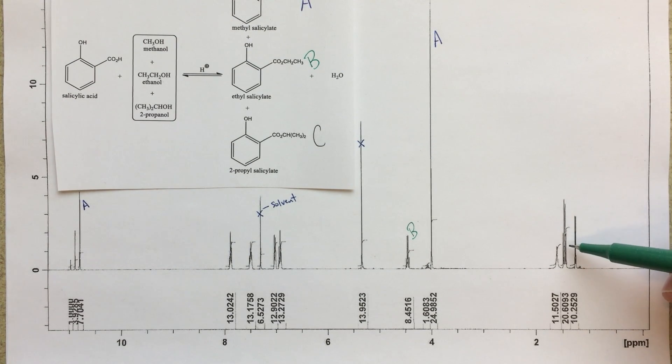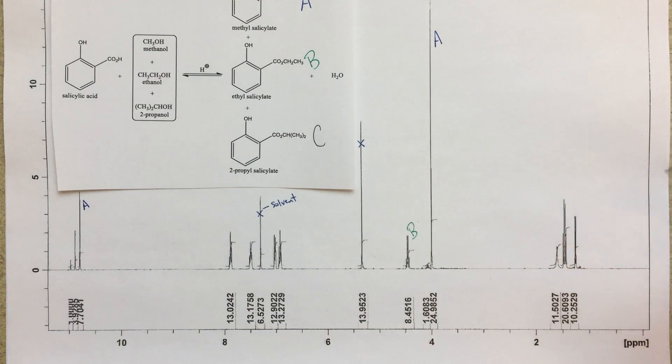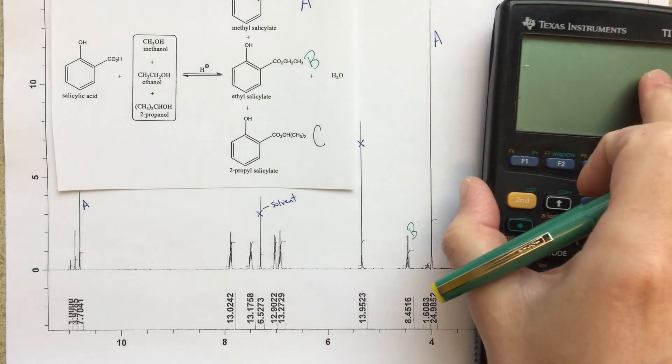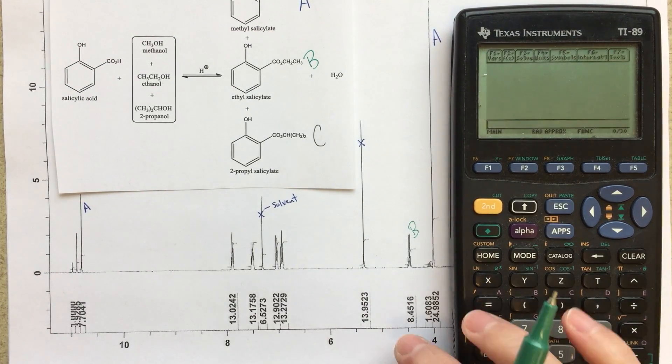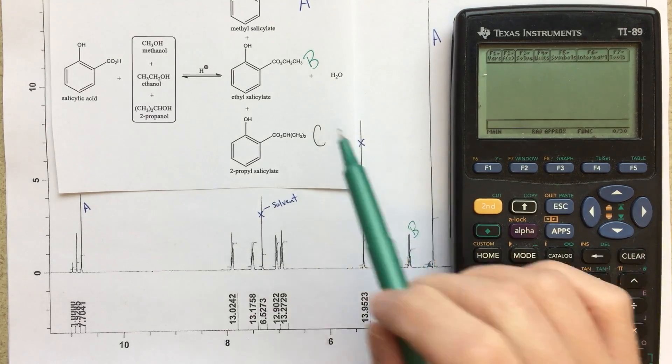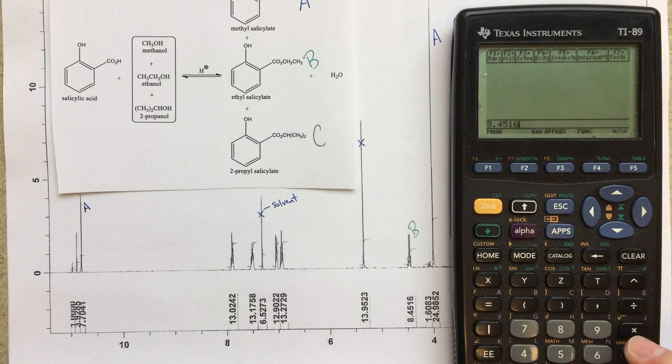This peak very clearly, I think, is a quartet. And you might get confused, you might think that this peak goes with this peak, but what I would do, and what I did actually, is I said, well, let's take the integration for this peak, which is very clearly the methylene linker, 8.4516, and let's multiply that by three divided by two.